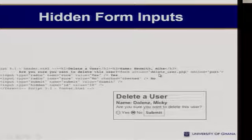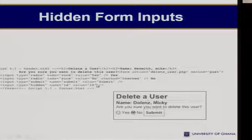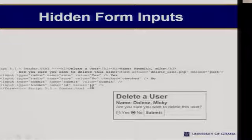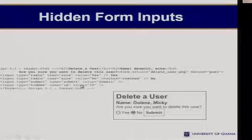You can see that here we are passing 'delete user', the method is POST, and we have a hidden field containing the user ID of the user we want to delete — in this case, it's 10. Upon submission, if it's yes, then we can pick this hidden value and proceed to delete that user.